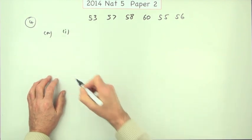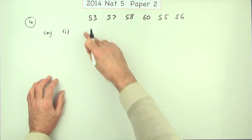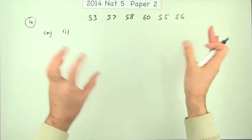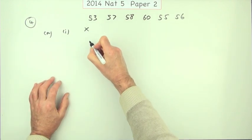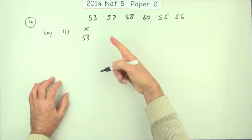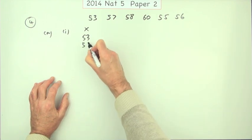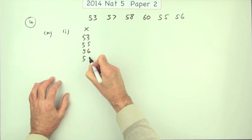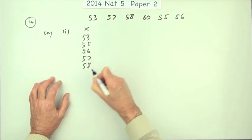Well it said find the mean showing all your working. But I think I'll show the total then. I know I need that column anyway no matter which of the formulae I'm going to use. So I'll call the numbers x and I think I'll just pop them into numerical order. Makes no difference to the calculation. 53, 55, 56, 57, 58 and 60.